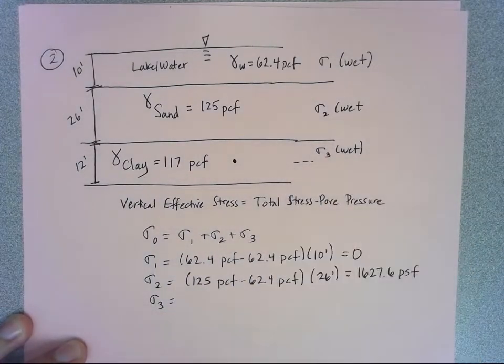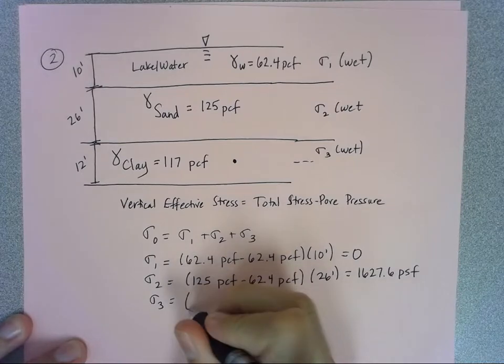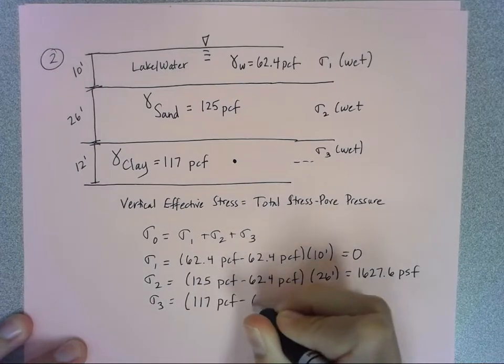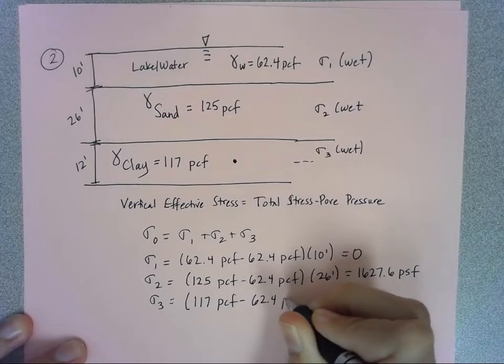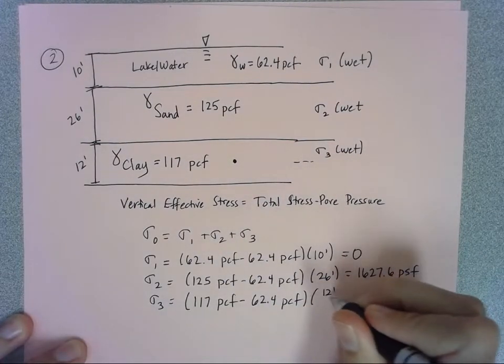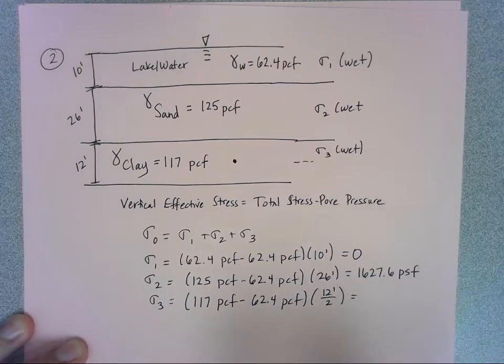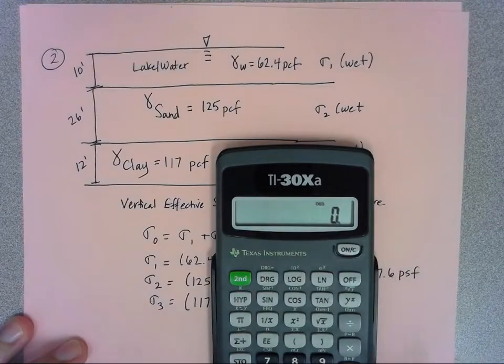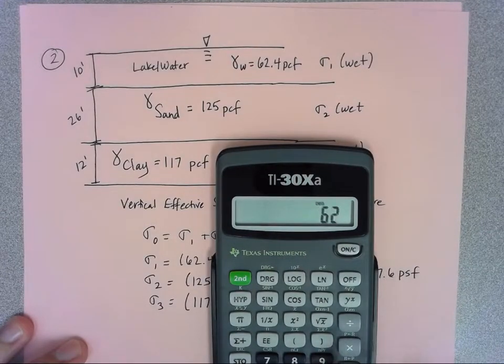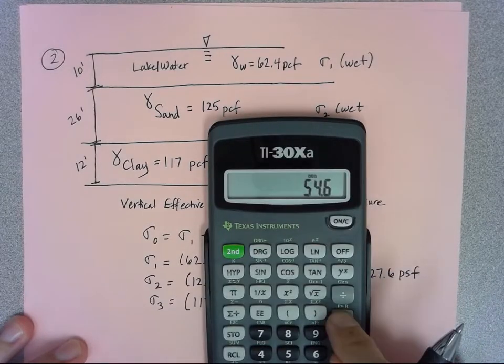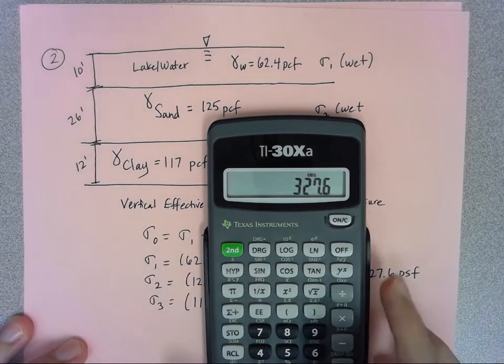I also have my sigma 3. Remember, it's just halfway through that clay layer, so I'll do my gammas first. It's 117 pounds per cubic foot minus 62.4 pounds per cubic foot, but I have to remember to take that 12 feet and divide it by 2 because it's just halfway into that clay layer. So I'll do my subtraction first - 117 minus 62.4 - and then multiply it by 12 divided by 2, which is just multiplying by 6.